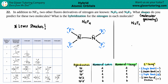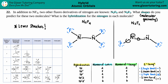Now let's draw the Lewis structure for N2F2. I have two nitrogens and two fluorines - I'll put one fluorine on each nitrogen. Each nitrogen has 5 valence electrons and each fluorine has 7. Single bond them up. Both fluorines have the octet - that's perfect. But this nitrogen only has 7 electrons, so I need to make that a double bond between the two nitrogens. Now both nitrogens have 8 electrons, so we're good.